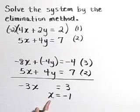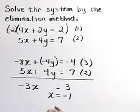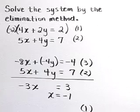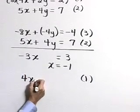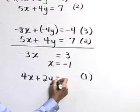We're halfway there. Now we want to solve for y. I'm going to go up and choose my first equation 1 to do that. That equation is 4x plus 2y is equal to 2.